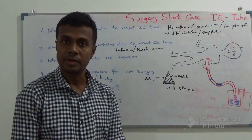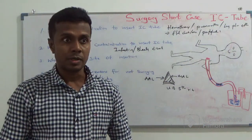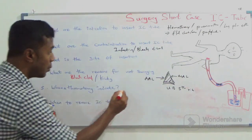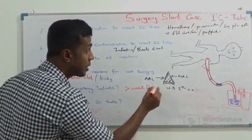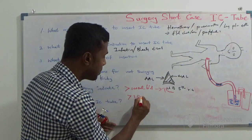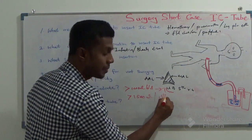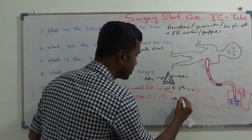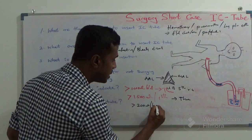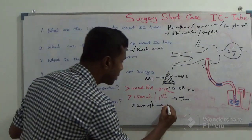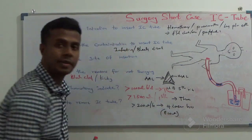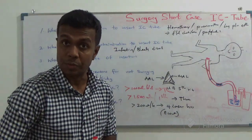Next question: when is thoracotomy indicated? Once you insert an IC tube, you have to think about thoracotomy if: more than 1,000 ml of blood suddenly comes through the IC tube; or more than 1,500 ml of blood in the first hour; or more than 200 ml per hour for 4 consecutive hours (totaling 800 ml). Those are the indications for thoracotomy.